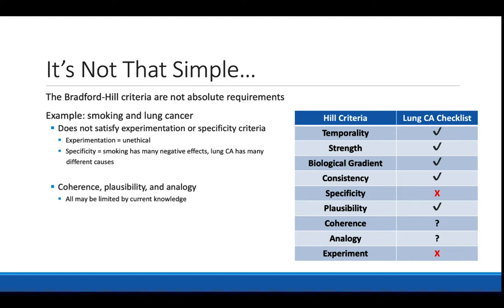However, the Bradford Hill criteria should be viewed as guidelines, not as absolute requirements. For example, consider the causal criteria regarding smoking and lung cancer. This relationship, although causal, does not satisfy all the criteria. We cannot ethically perform an experiment in which we randomize people to smoke a pack of cigarettes per day or to abstain from smoking, so we cannot satisfy that criterion.